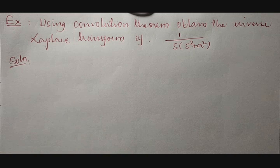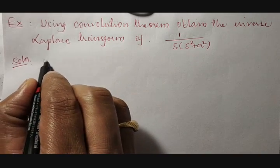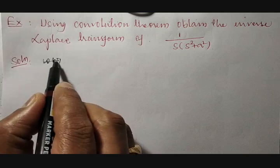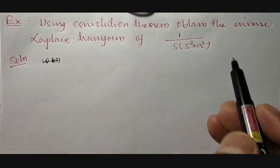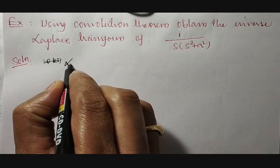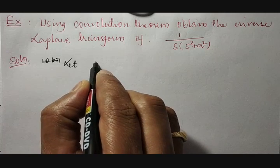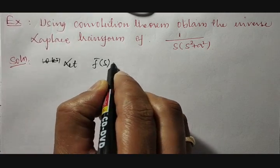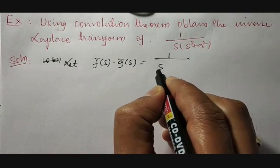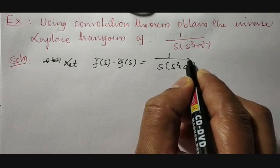In this case, very first we have to consider one point. We can see that it is a product of two functions. Therefore, let us consider this as f̄(s) into ḡ(s), which is equal to 1 divided by s into s squared plus a squared.